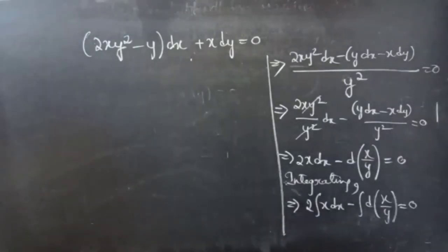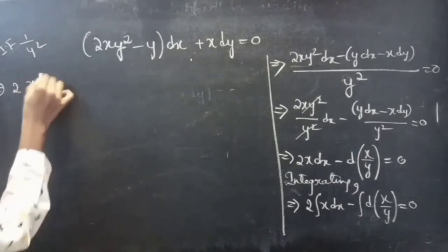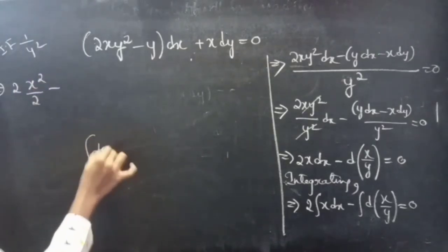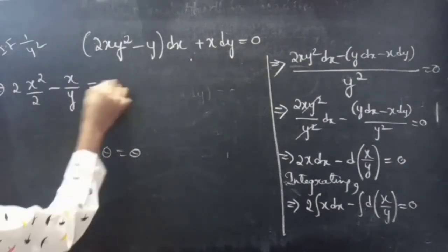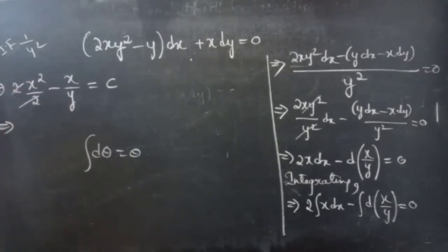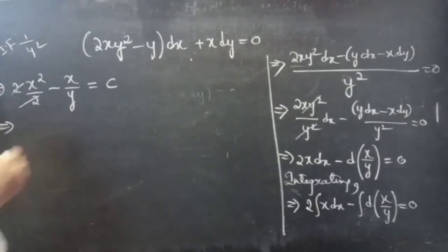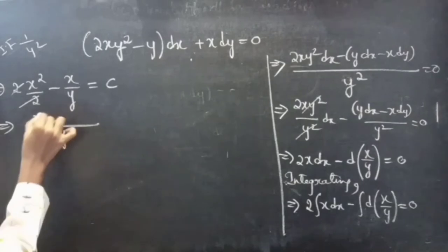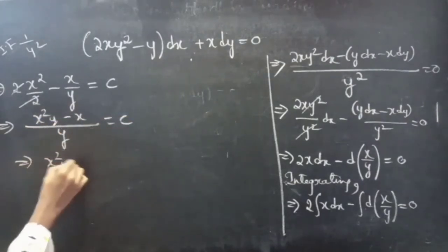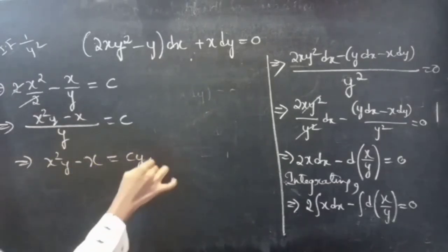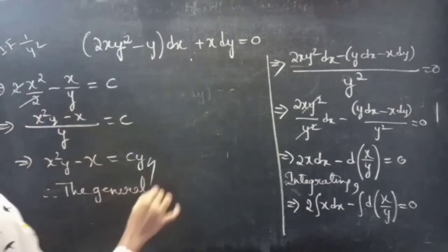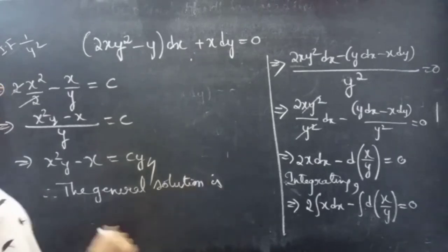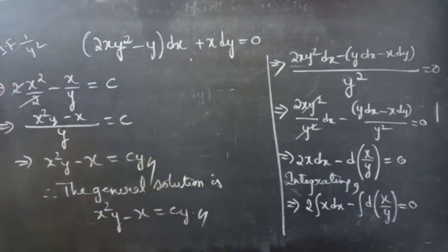So 1/y² is our integrating factor. Integrating, 2∫x dx − ∫d(x/y) = constant. We get 2 · x²/2 − x/y = c, and cancelling the 2 gives x² − x/y = c. Taking LCM y, the numerator gives x²y − x = cy, so the required general solution is x²y − x = cy.